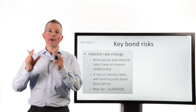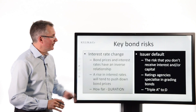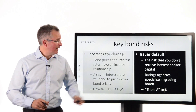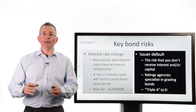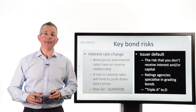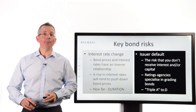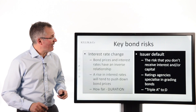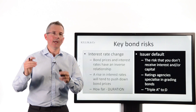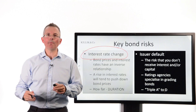Duration only looks at one side of the bond risk equation. There is another one, which is issuer default — the risk that you simply don't get your money back. That is left to another form of risk assessment. There are ratings agencies out there, for example Moody's and Standard & Poor's, who do risk ratings. That tells you more about the risk of issuer default. But just be aware that duration is dealing with just this side of the equation.